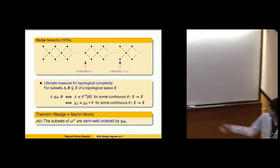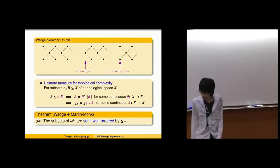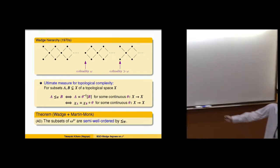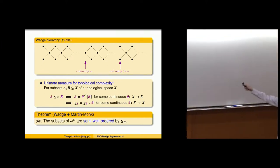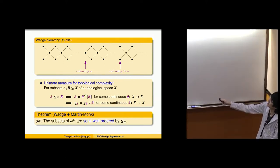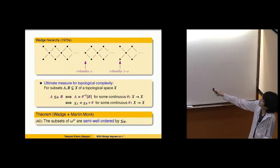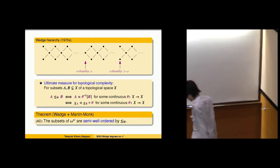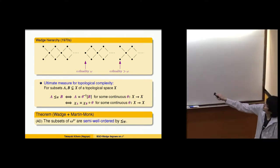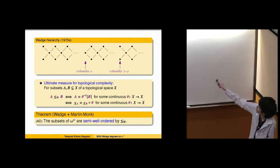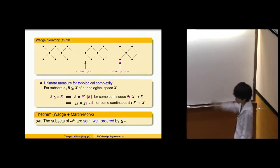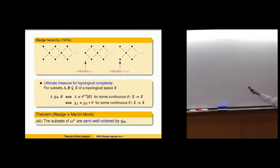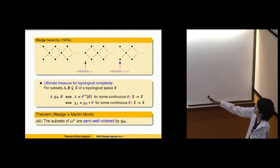Under the axiom of determinacy, Wadge and Martin and Monk showed that the subsets of Baire space are semi-well-ordered. There may be an anti-chain of size two, but modulo this anti-chain of size two, the ordering is well-ordered. If we collapse the two incomparable degrees, the structure becomes well-ordered.